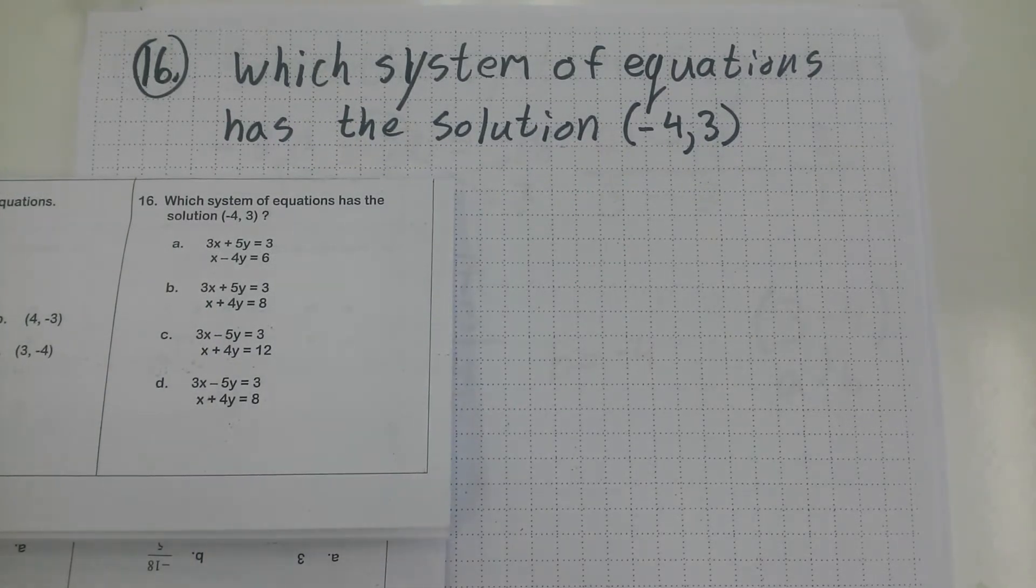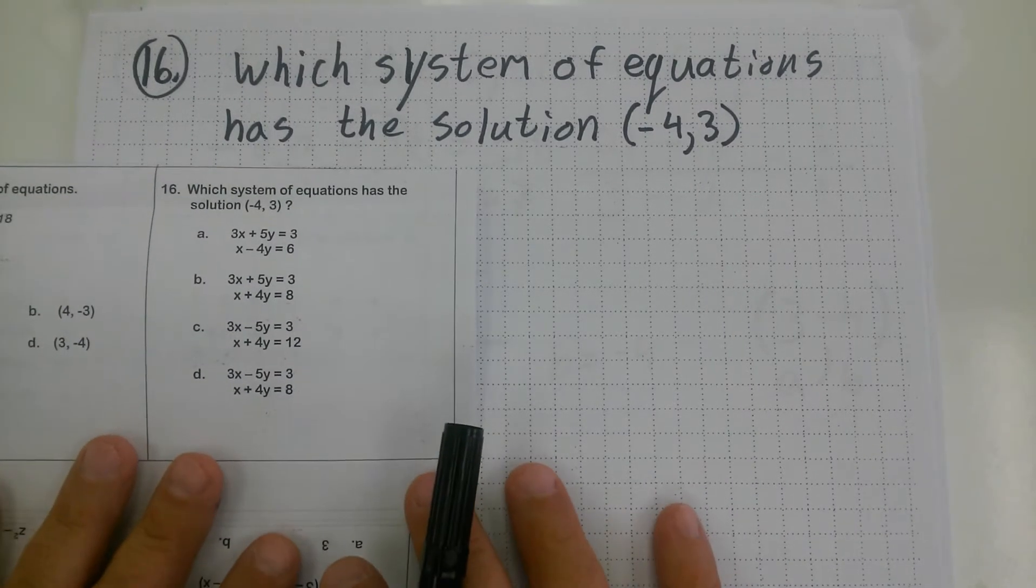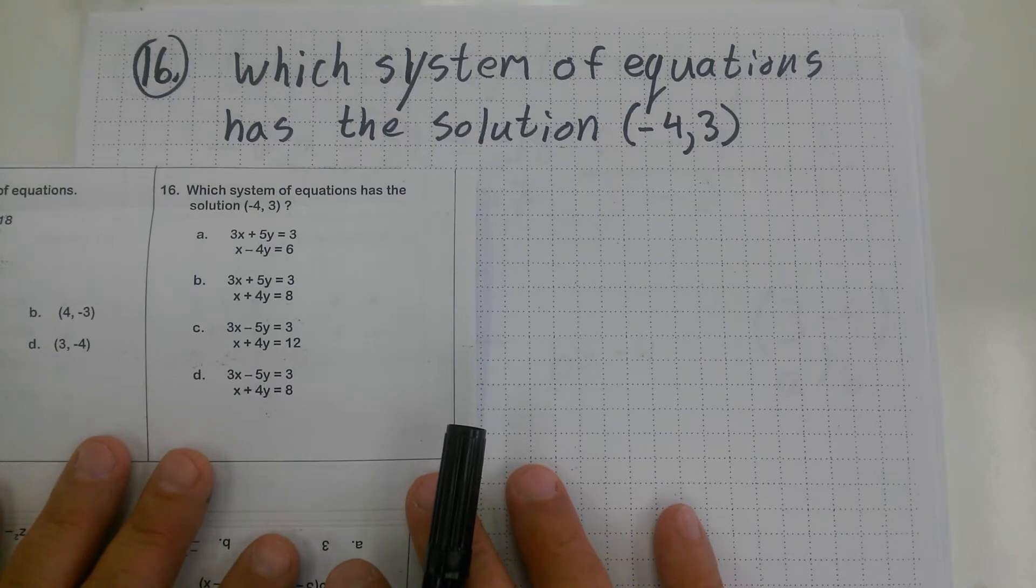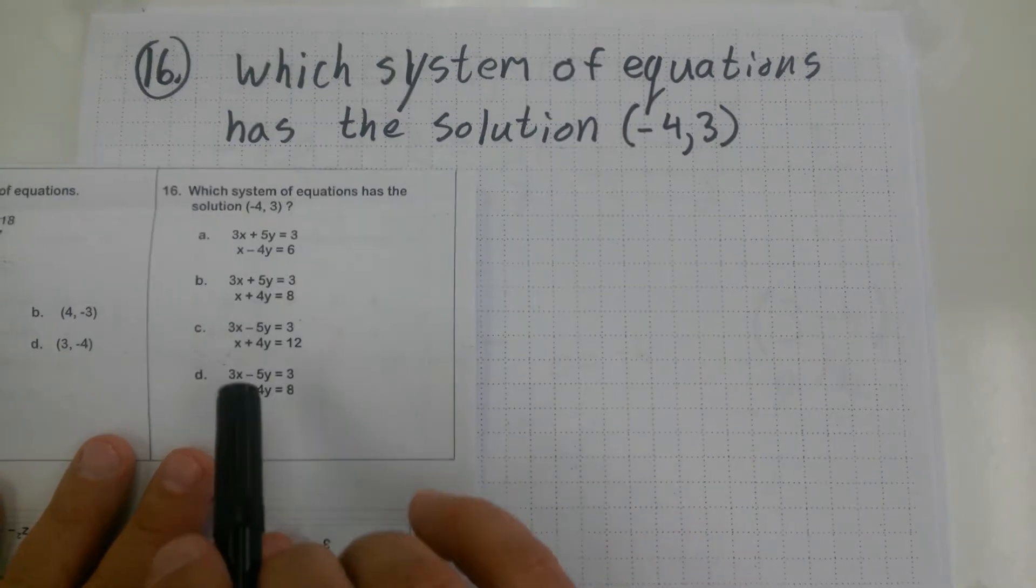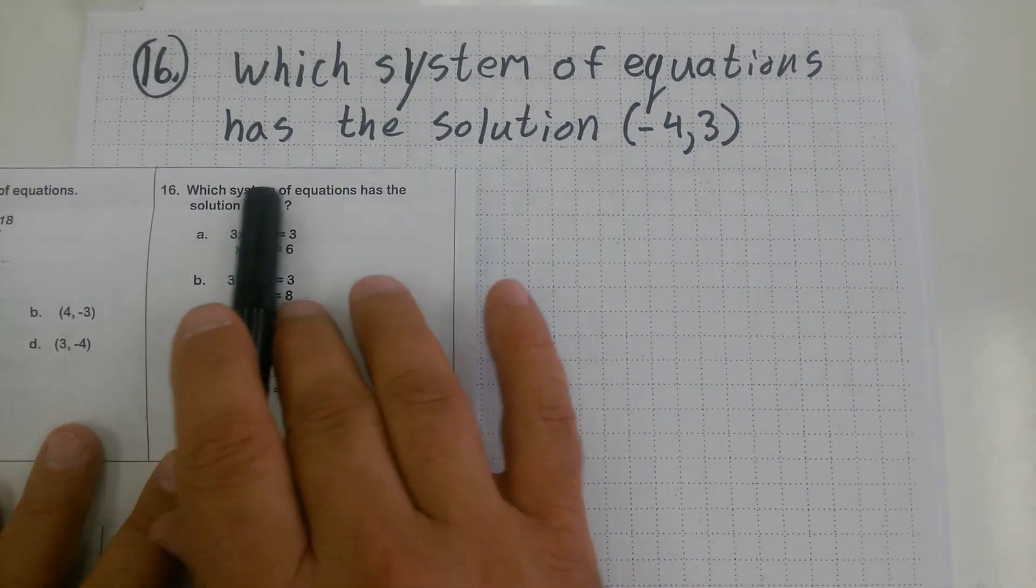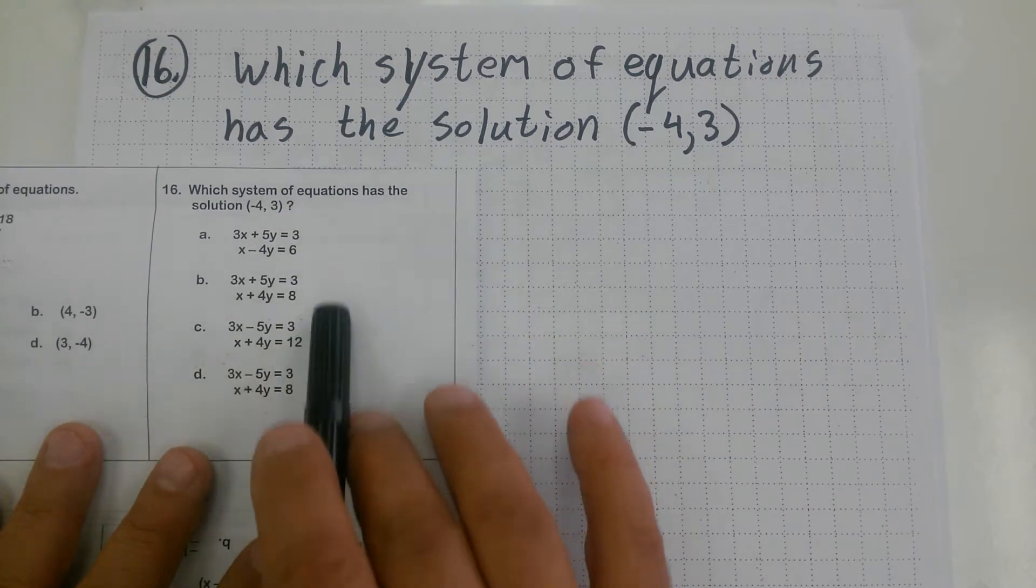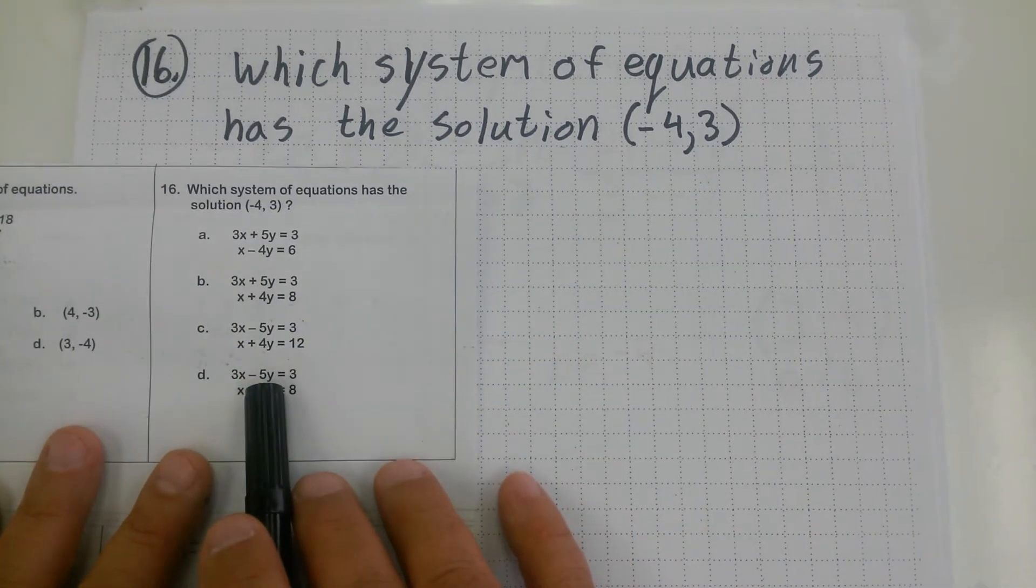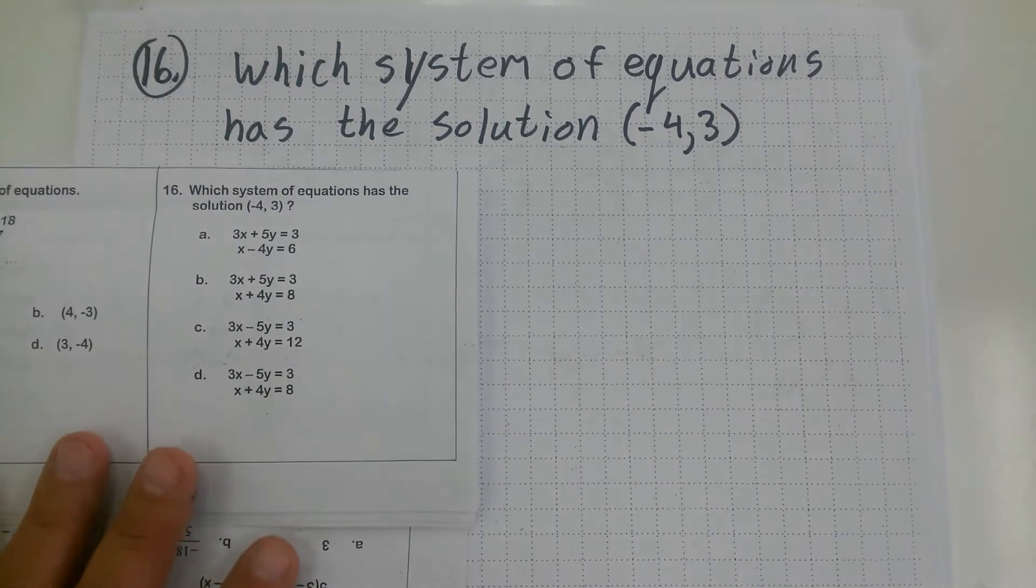Number 16 from the PERT practice test. This is probably one of the most time-consuming problems you're asked to do on this practice test because you can't work out the question and find the answer. You have to work out the answers and see if it matches the question.